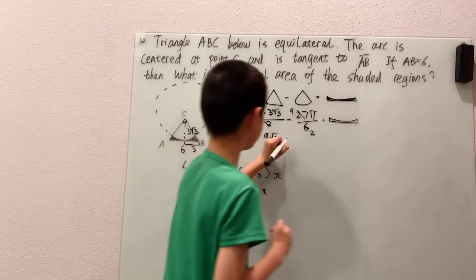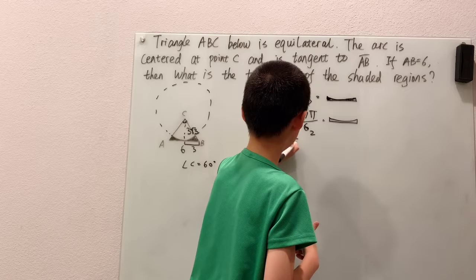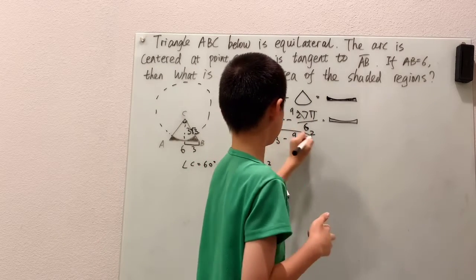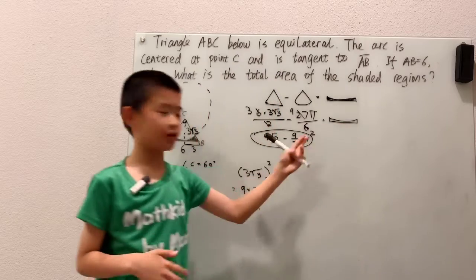and here we have three times root three, is nine root three, minus nine over two, times pi, and this is the answer.